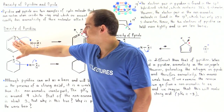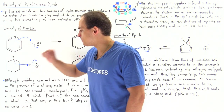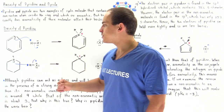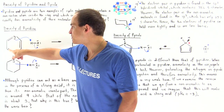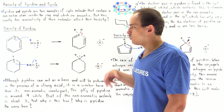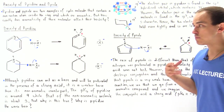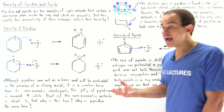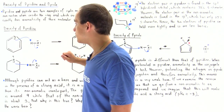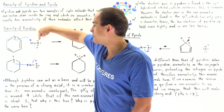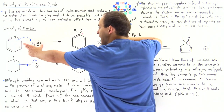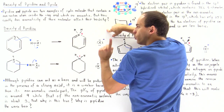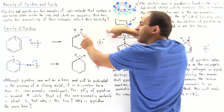Let's compare the basicity of pyridine to its non-aromatic counterpart — the same molecule minus the three pi bonds. We take these two molecules and place them in the presence of a strong acid. The lone pair of electrons takes away the H atom, forming a conjugate base. So we have the acid, the conjugate base, the base, and the conjugate acid — and notice that the nitrogen develops a positive charge.